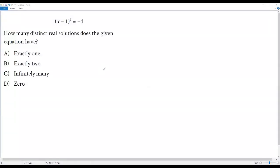Here we have a math question. Let's go to the question. (x - 1)² = -4. How many distinct real solutions does the equation have?